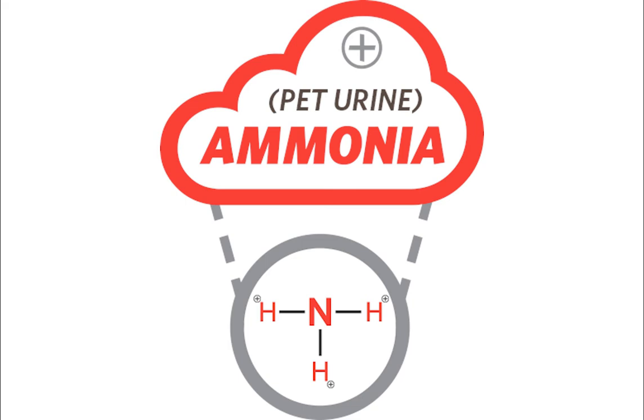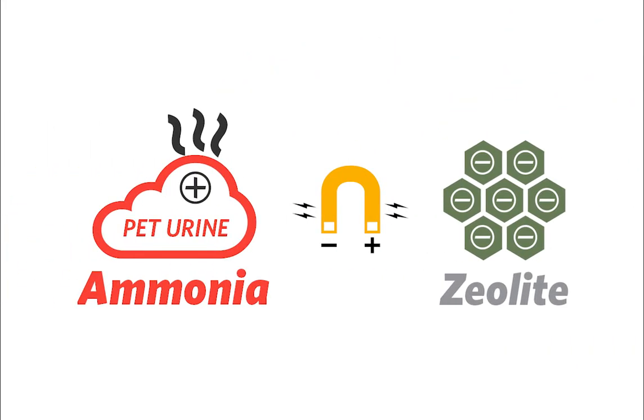Ammonia is the primary odor and bacteria producer found in pet urine. Zeolite attracts all kinds of odor producers through magnetism.